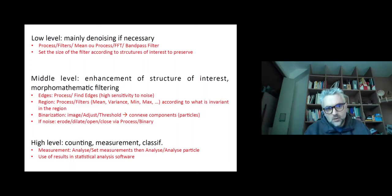We've seen there was low-level image processing mainly for denoising that we can visit by going to Process > Filters > Mean or Median filters. If you have spurious noise, you can also denoise by going to Process > FFT > Bandpass Filter and set the size of the filter according to the structure of interest you want to preserve.